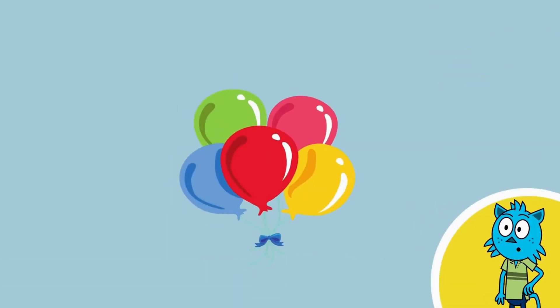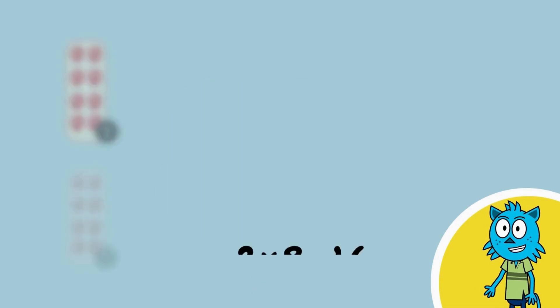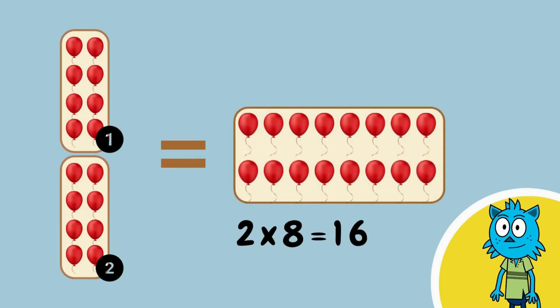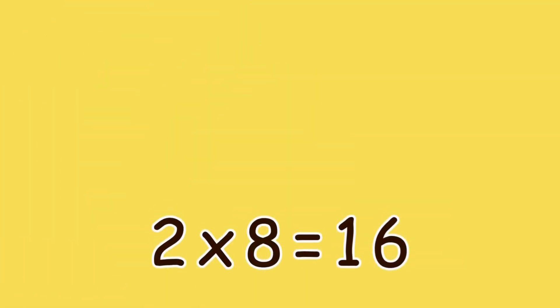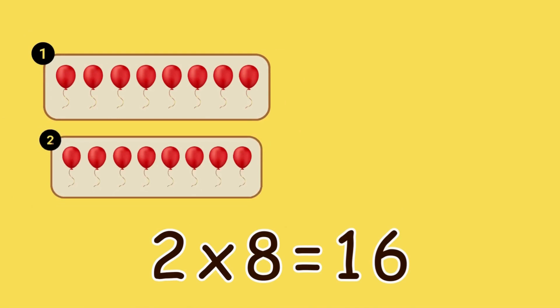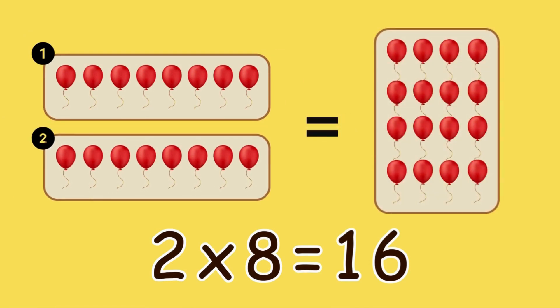Now, let's count some balloons. Two groups of eight balloons equals sixteen balloons. Two times eight — one, two — is sixteen.